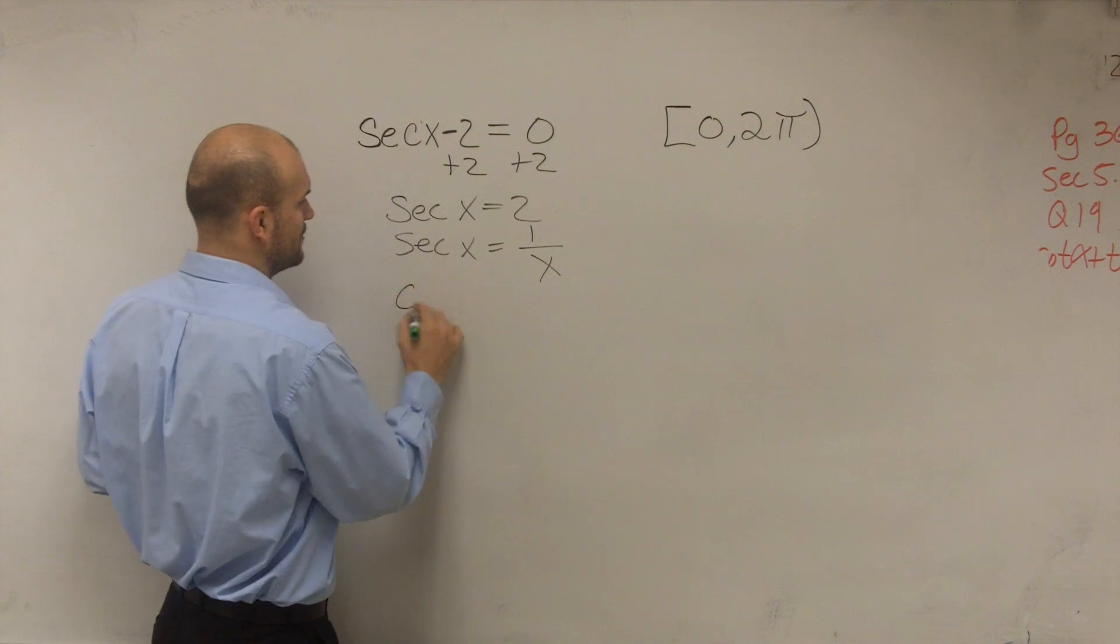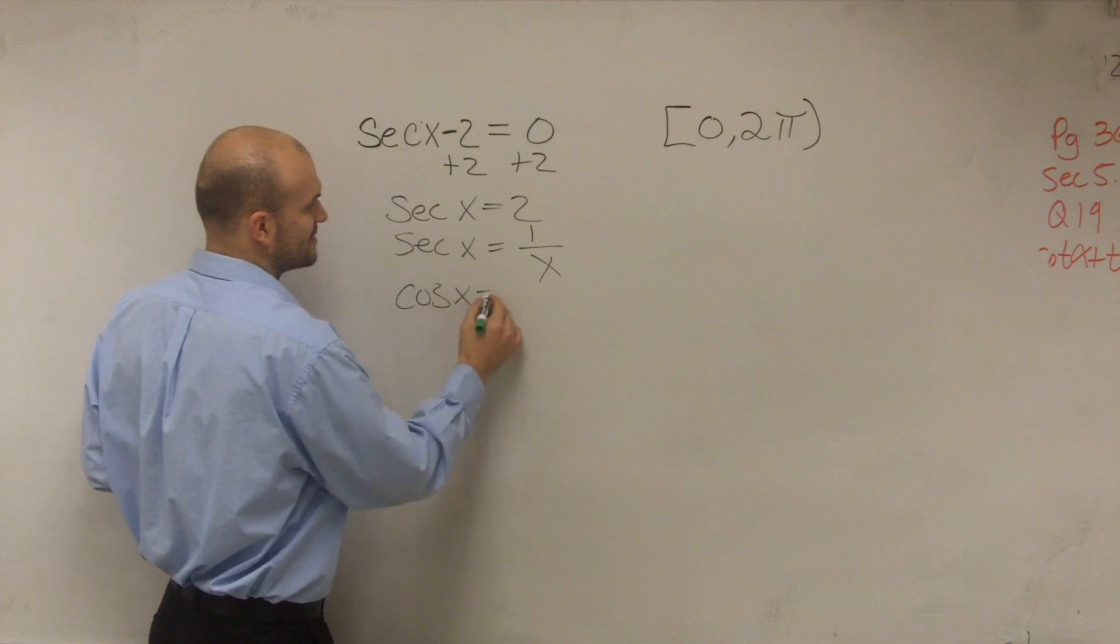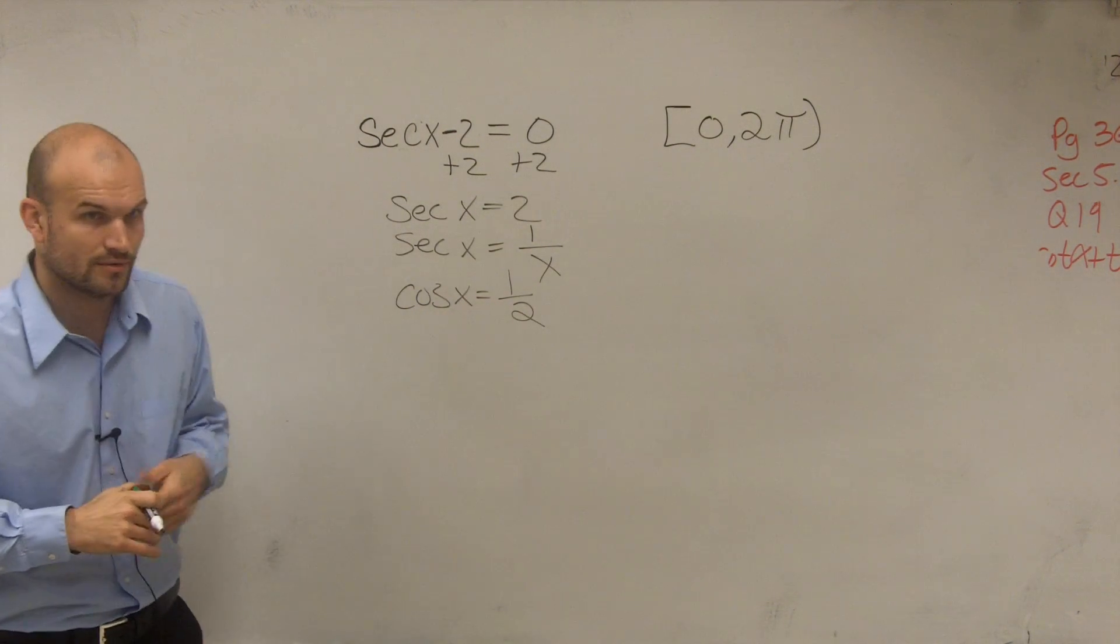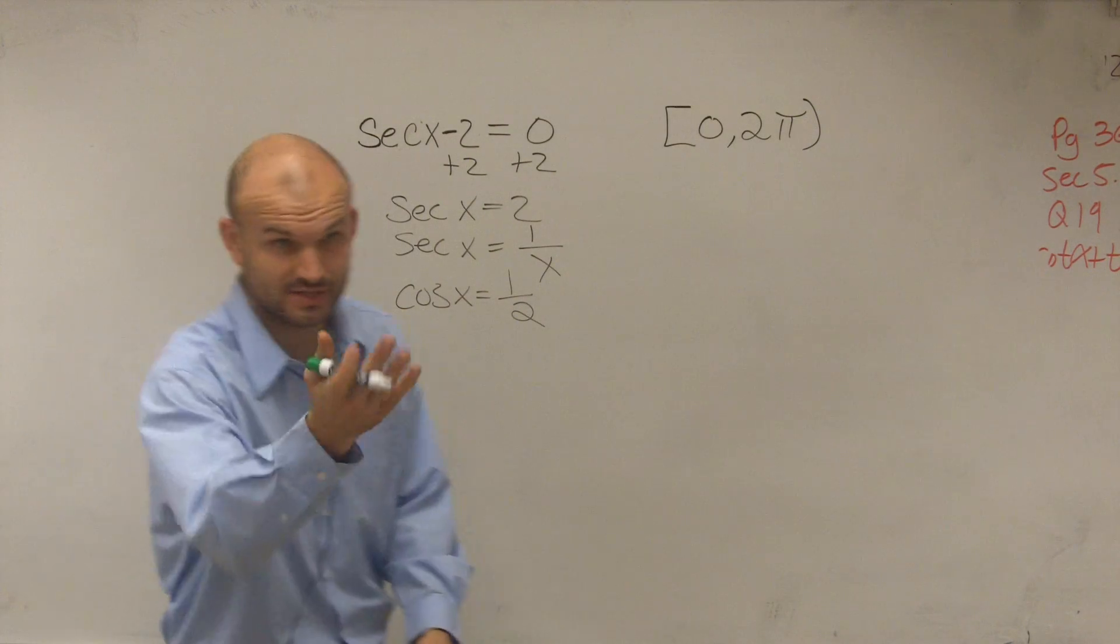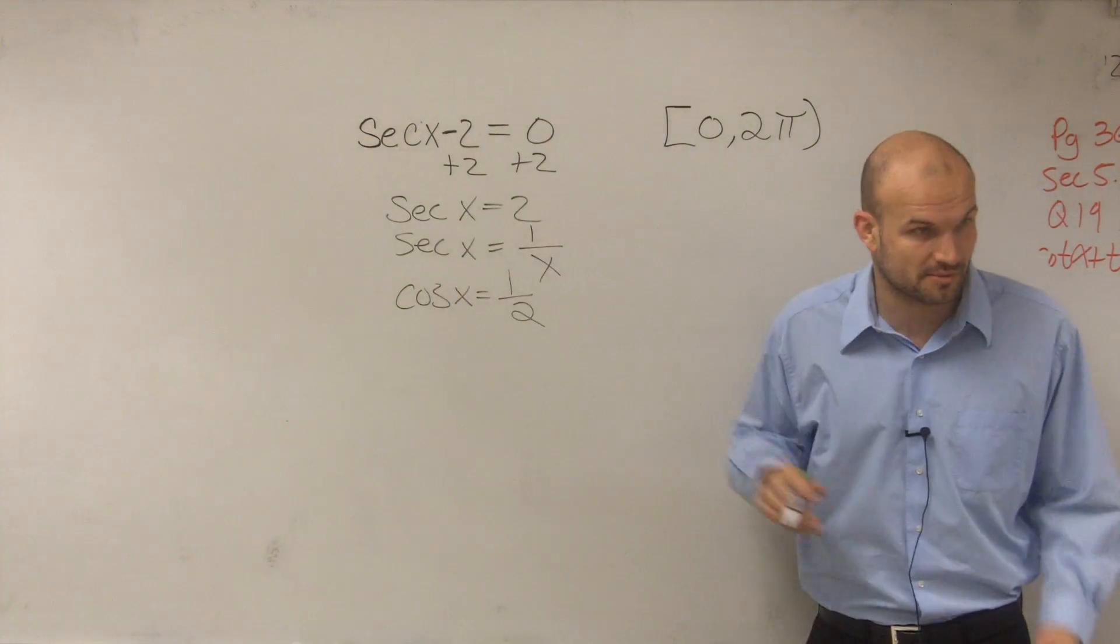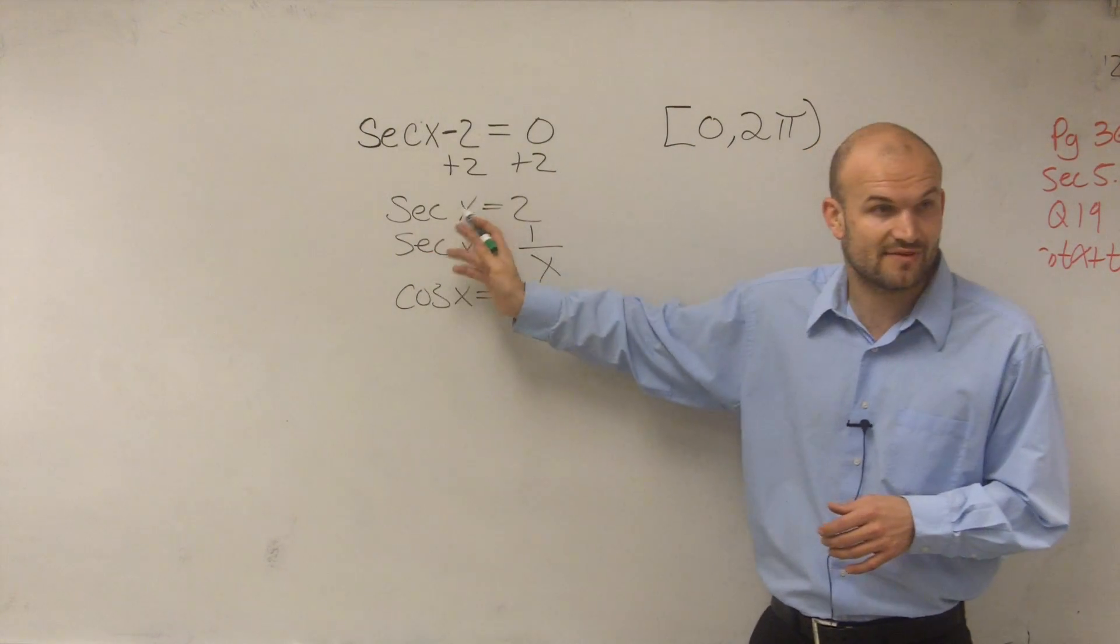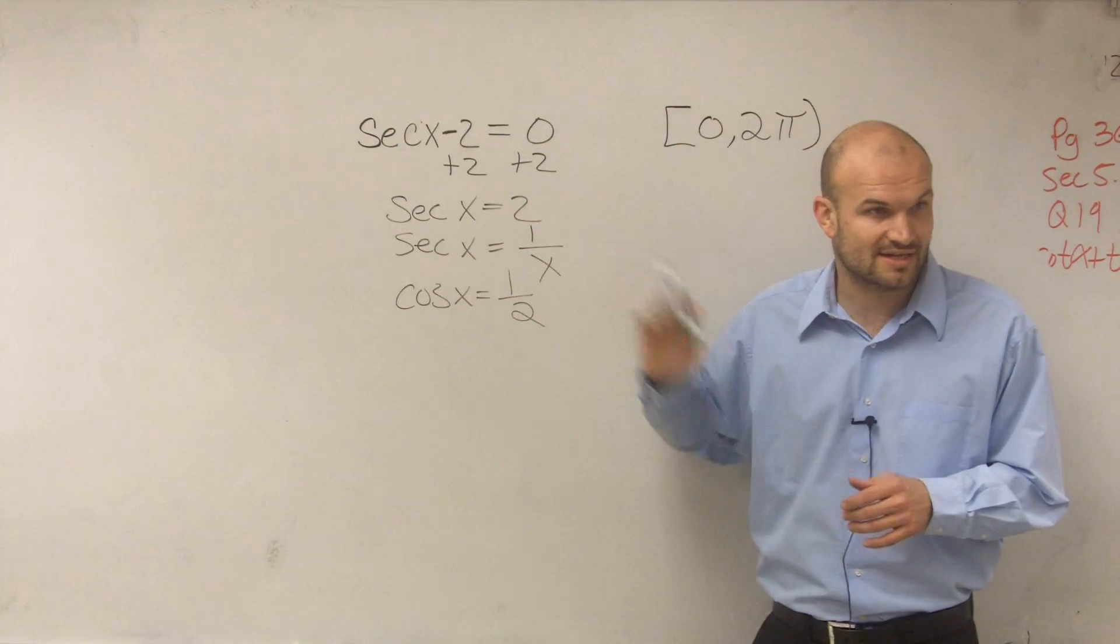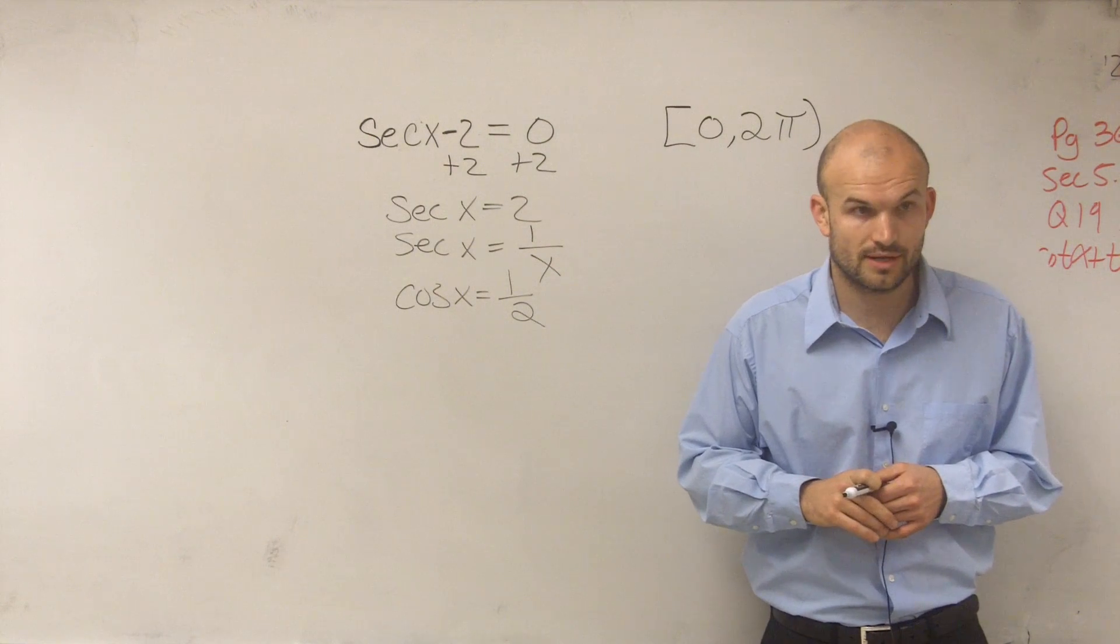So therefore, you could say that means the cosine of x equals 1 over 2, right? Since these are reciprocals - do you understand that cosine and secant are reciprocals of each other? So if secant of x equals 2, cosine of x equals 1/2.